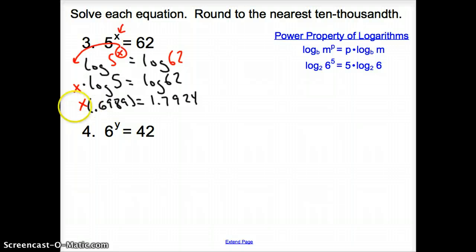How is this x attached? It is attached through multiplication. So we have to divide on both sides by 0.6989 to get x all by itself. So now x equals 2.5646.